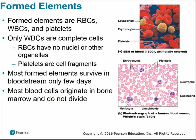Of the formed elements, only white blood cells are complete cells. Platelets are just cell fragments, and red blood cells have no nuclei or other organelles. Most formed elements can only survive in the bloodstream for a few days, though some immune memory cells can last a lifetime. Blood cells originate in the bone marrow and do not divide, so new blood cells can only come from the bone marrow — a white blood cell cannot undergo mitosis to make more white blood cells.